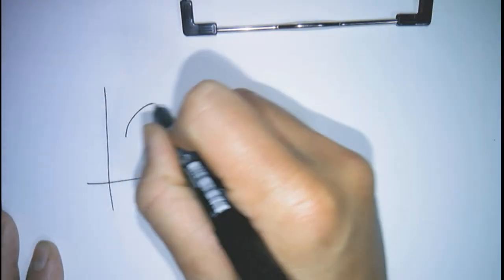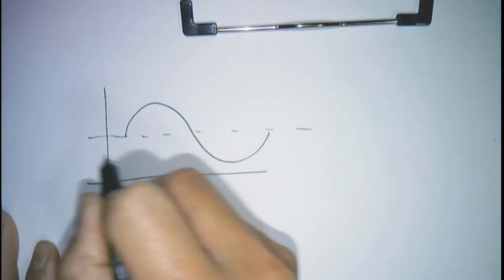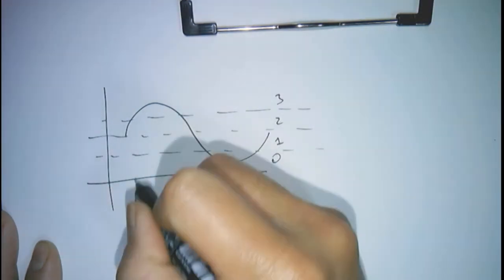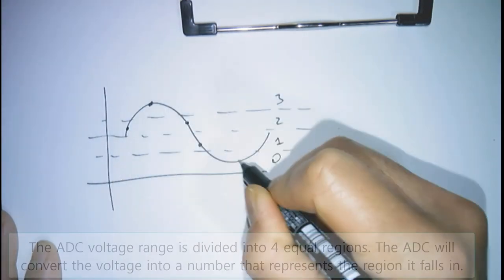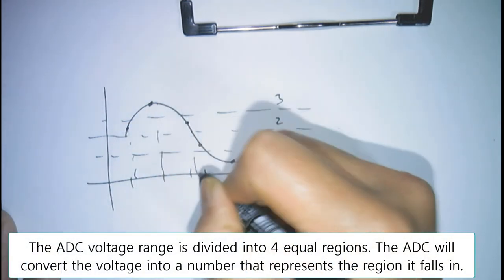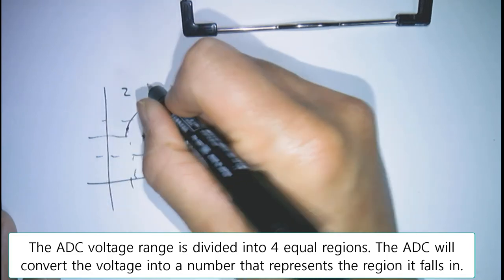Now let's take a look at a 2-bit ADC. A 2-bit ADC means it'll have 2 to the power of 2 levels, or 4 quantization levels. So we divide up our voltage range into 4 equal parts. That means the output can assume a value from 0 to 3.